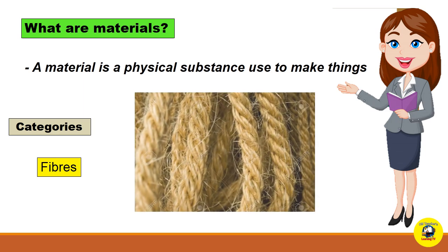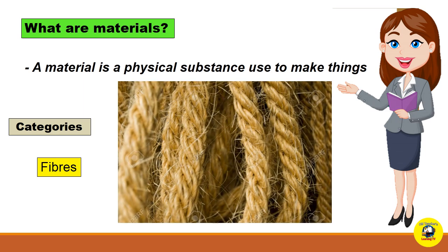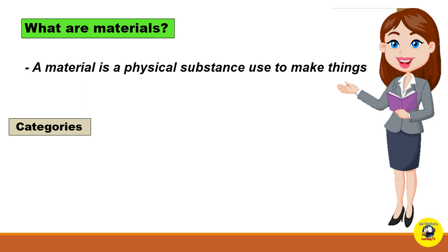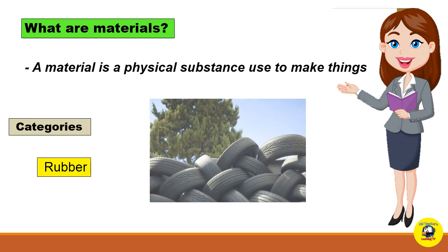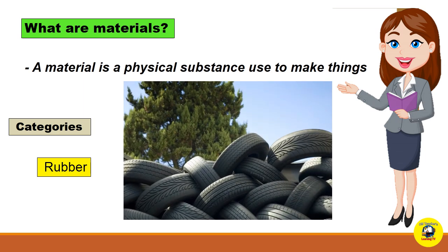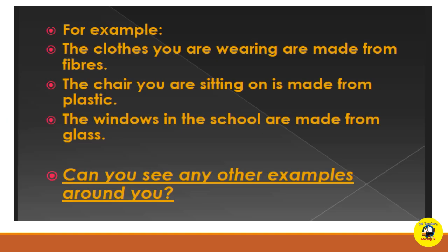We also have fibers. Fibers are a natural or man-made substance often used in the manufacture of other materials. One example is cotton. And lastly, we have rubber. Rubber is used extensively in many applications and products, either alone or in combination with other materials. In most of its useful forms, it has a large stretch ratio and high resilience, and is extremely waterproof.